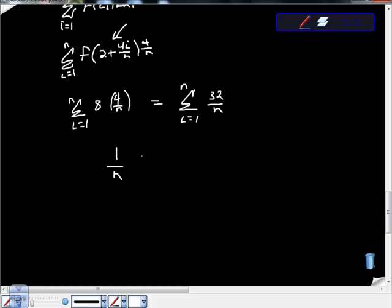So I'm going to factor out my 1 over n, right, times the summation as i equals 1 to n of 32. Now we're going to use our summation formulas. And you have to have these memorized. They're going to really come in handy. So we're going to go to our summation formulas.